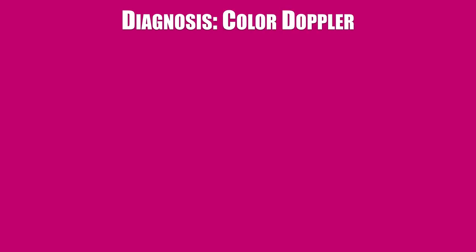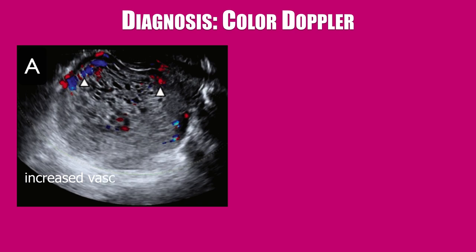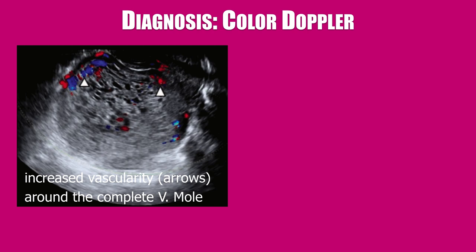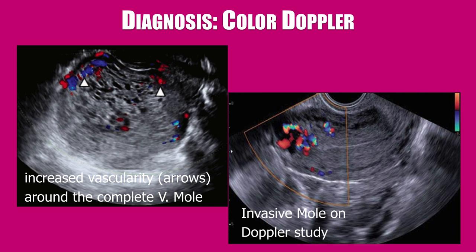Color and spectral Doppler flow studies are used together with ultrasound grayscale in the diagnosis of a complete mold, invasive mold, as well as for post-treatment follow-up. Picture A shows areas of increased vascularity around the complete vesicular mold. Picture B is a transvaginal ultrasound acquired during post-molar pregnancy follow-up when HCG levels were elevated, showing hypoechoic areas in the myometrium resembling neovascularization, suggestive of an invasive mold on the Doppler flow study.